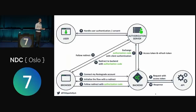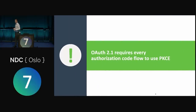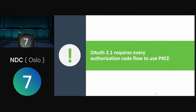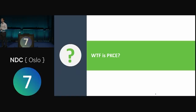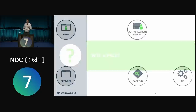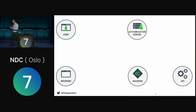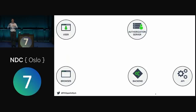The authorization code flow from 2012 is no longer valid today in that form. OAuth 2.1 says every authorization code flow requires the use of PKCE — Proof Key for Code Exchange. The goal of PKCE is to tie the start of a flow to the exchange of the code, to avoid somebody messing with the integrity of those steps. We're going to do that using a hash function.